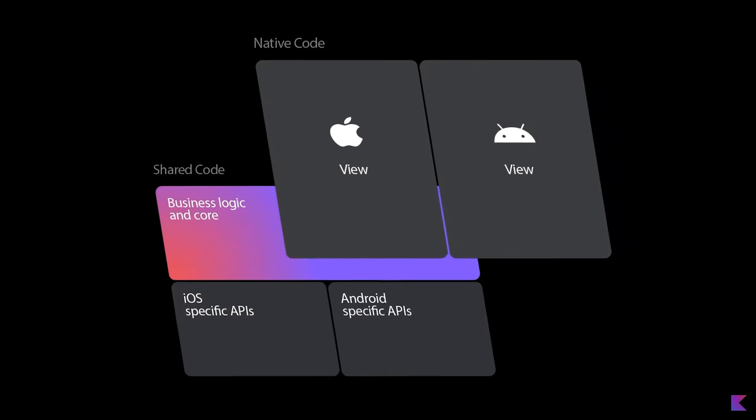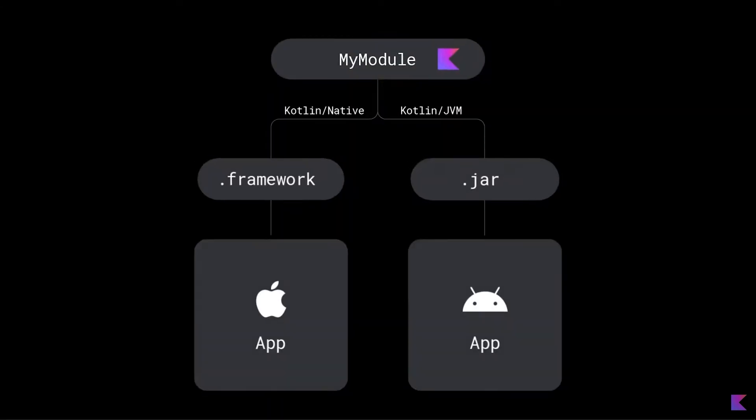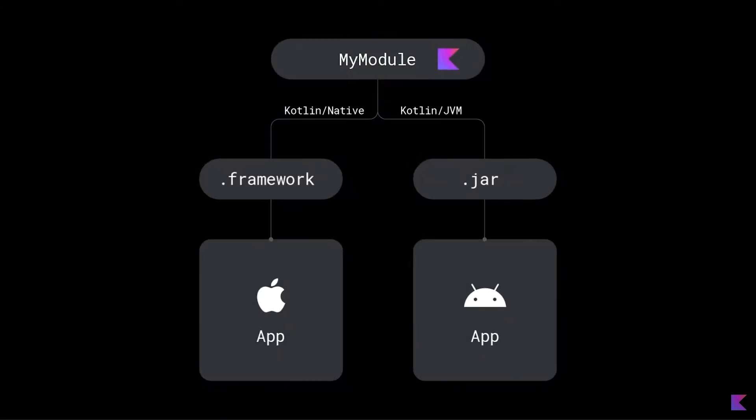Cross-platform mobile development allows you to build mobile applications with a single code base and then push them out to both iOS and Android for faster development and easier code maintainability. Kotlin Multiplatform Mobile is now in beta and ready for production.